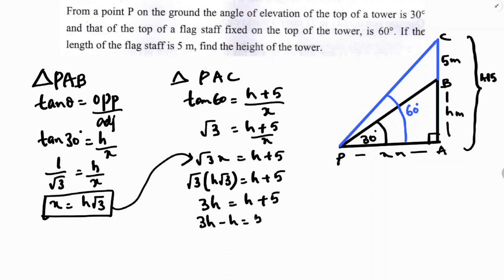3h minus h equals 5. 2h equals 5. So, h equals 5 by 2. So, h is nothing but 2.5 meters. So, the tower is 2.5 meters high.